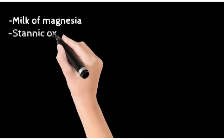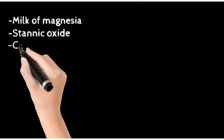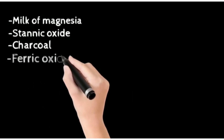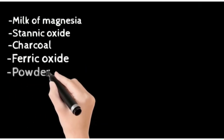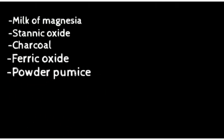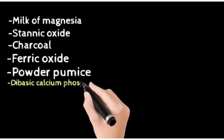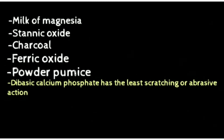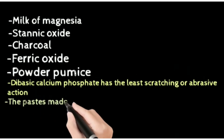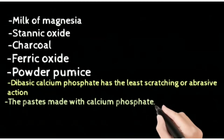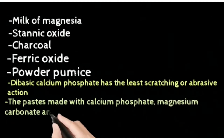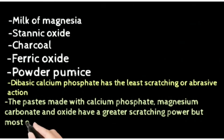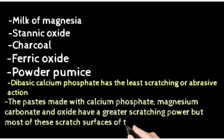Stannic oxide and charcoal are also used as dental abrasives, along with ferric oxide and pumice powder. Dibasic calcium phosphate has the least scratching or abrasive action. Pastes made with calcium phosphate or magnesium carbonate and oxide have greater scratching power, and most of these will scratch the surface of the enamel.